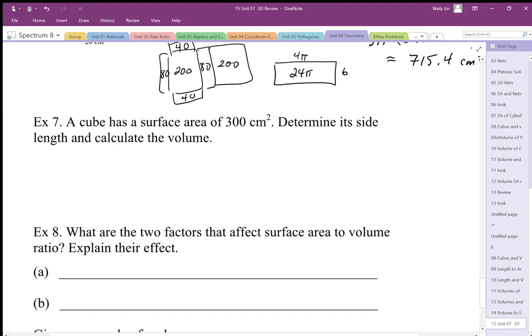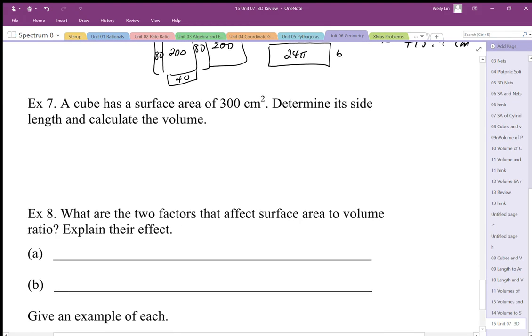Okay, so last couple questions here. A cube has surface area 300. Well, that has to be split up between six equal surfaces.